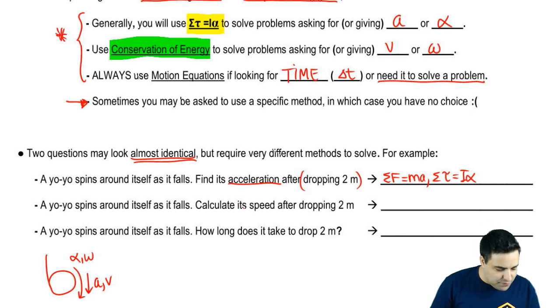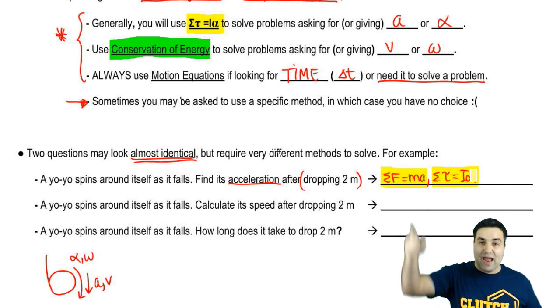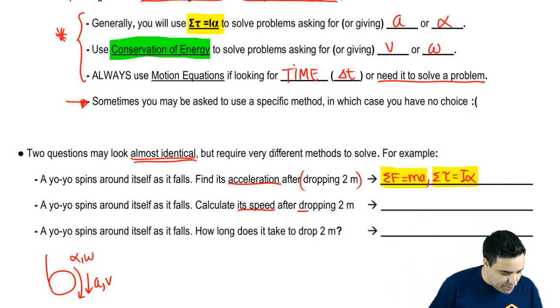Here a yo-yo falls, and by the way, the reason you use both of these is because a yo-yo has linear acceleration and angular acceleration at the same time. Okay? Now here, we want to know the speed after dropping two meters. Both pieces of information are important and we're going to use energy.